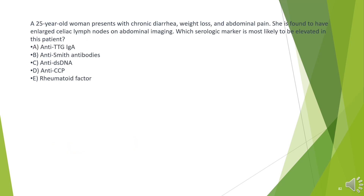A 25-year-old woman presents with chronic diarrhea, weight loss, and abdominal pain. She is found to have enlarged celiac lymph nodes on abdominal imaging. Which serologic marker is most likely to be elevated in this patient?